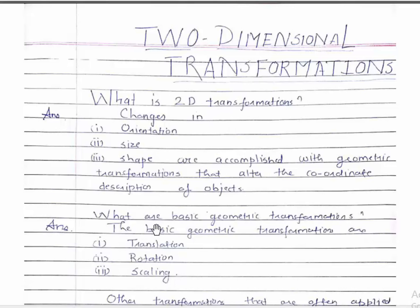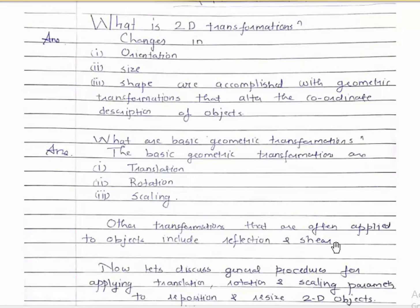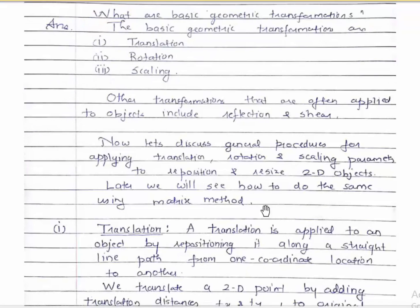The basic geometric transformations are translation, rotation, and scaling. There are other transformations also that we will check out later — reflection and shear. Now let's discuss general procedures for applying translation, rotation, and scaling parameters. First we will look at what all three types of transformations are, then we will find out the simple way of performing all three.